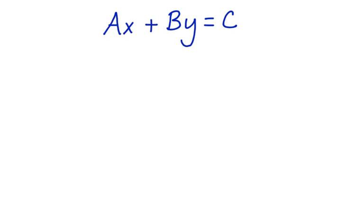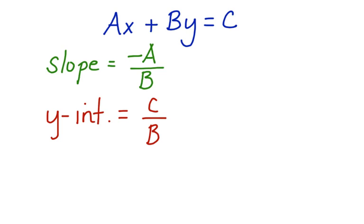How can we find the slope and the y-intercept of an equation in standard form? There's a couple of ways to do it. Let's take a look at this. To find the slope, we look at the ratio of negative a over b. To find the y-intercept, we look at the ratio of c over b. Let's look at how this works in practice.